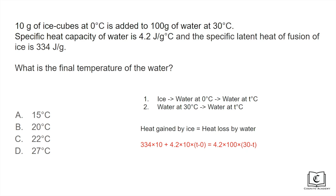And then on the right hand side we consider the heat loss by the water which is just 4.2 times 100 grams of water times the temperature difference which is 30 degree celsius which is the original temperature minus T which is the final temperature.